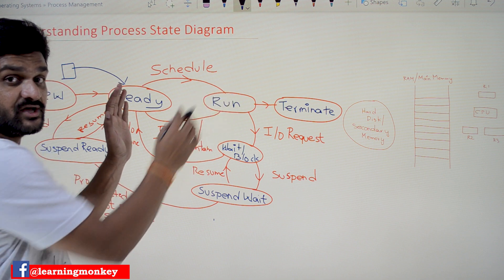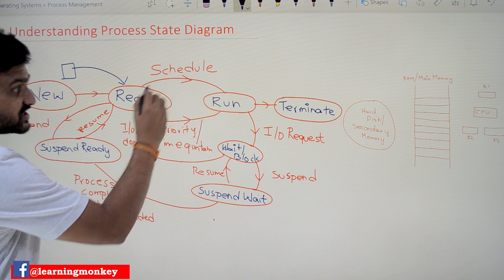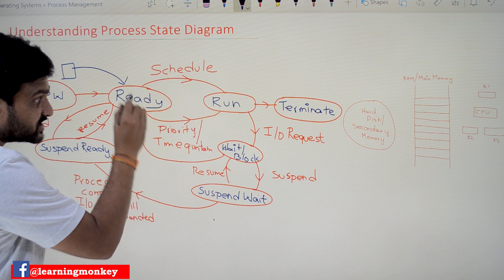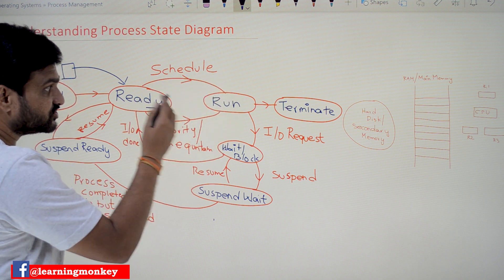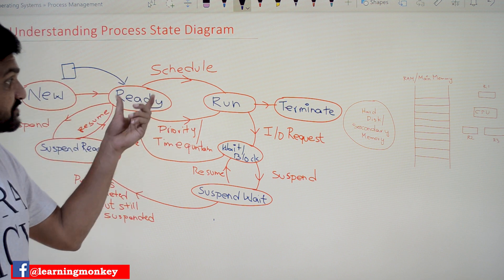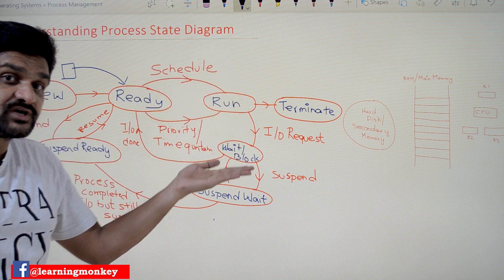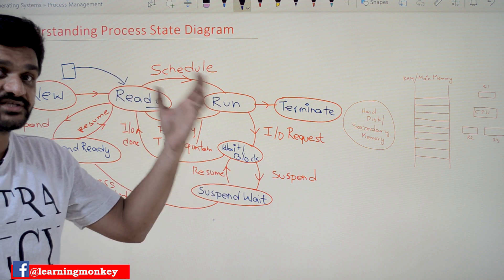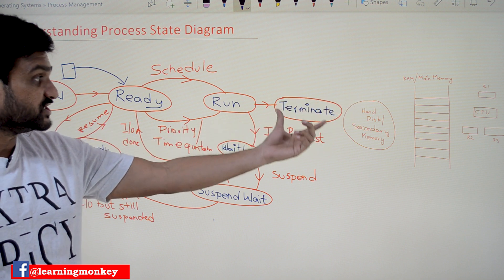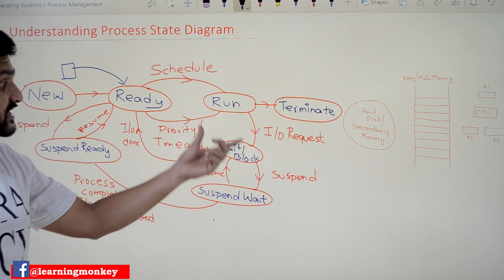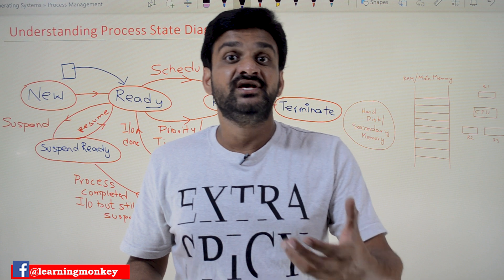Once in the ready state, the process will be transferred to the run state. The instructions in the process will be shifted onto the CPU instruction by instruction. As the instructions are getting executed, the process is in the running state. If all the instructions of the process are completed, then it will go to the terminate state and will be shifted out from the RAM.